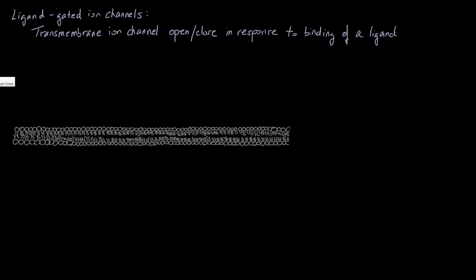When we talk about transmembrane ion channels, what we really mean is they are transmembrane or integral proteins that also have a channel, a hole through them, in which things can move in and out. So to start with, let's say we have an ion channel that looks something like this.